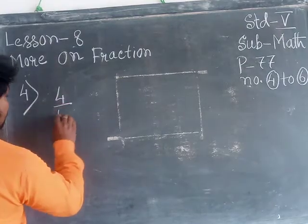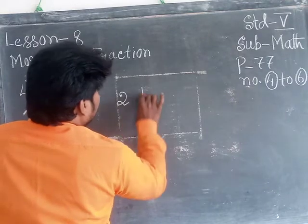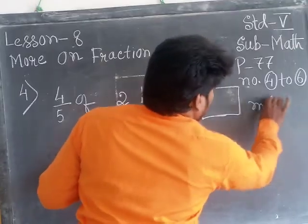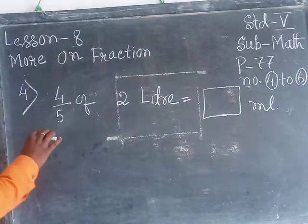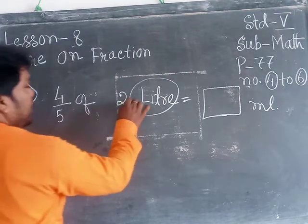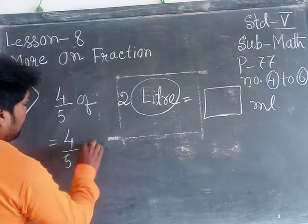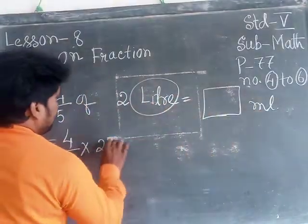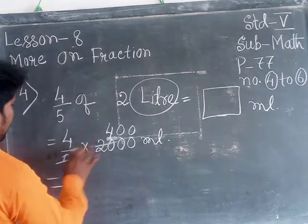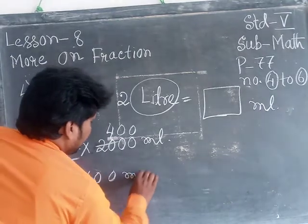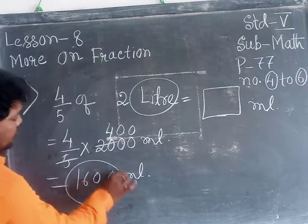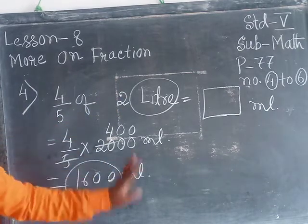Suppose four-fifths of two liters. Two liters will be changed to milliliters, that means 2,000 milliliters. The calculation gives different results like 4,500 milliliters and 1,600 milliliters. And if the answer asks how many liters and milliliters, then you will change milliliters into liters. That means one liter is 1,000 milliliters.